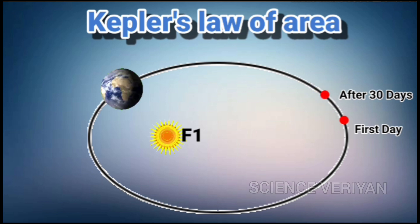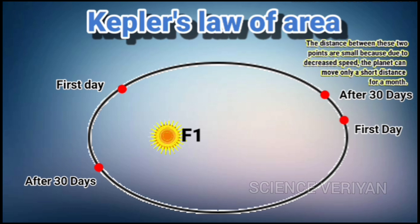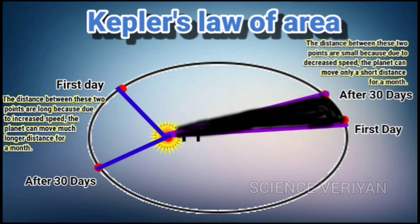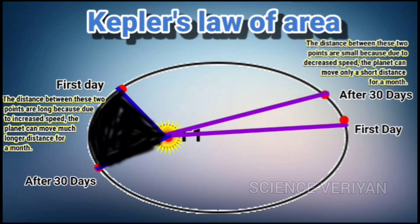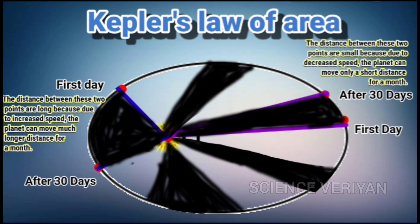Now we have to mark the point of the planet in the elliptical orbit. We have to mark the point of the planet in the elliptical orbit. So this planet covers the same time in the planet's orbit.